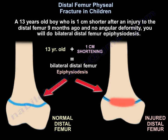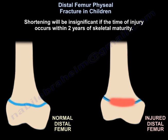A 13-year-old boy is 1 centimeter shorter after an injury to the distal femur 9 months ago with no angular deformity — you will do bilateral distal femur epiphysiodesis. Shortening will be insignificant if the time of injury occurs within 2 years of skeletal maturity.